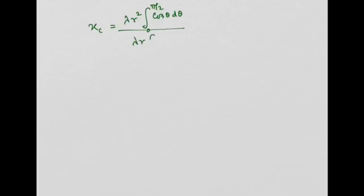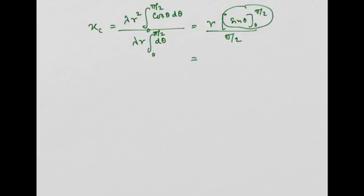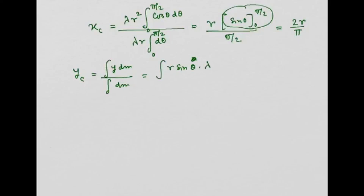The integration of sin theta from 0 to pi by 2 is simply 1, so the x coordinate of the center of mass is 2r by pi. Similarly, y_com equals integration of y dm divided by integration of dm, where y is r sin theta and dm is lambda r d theta with the same limits. Here also we get the same result: 2r by pi.